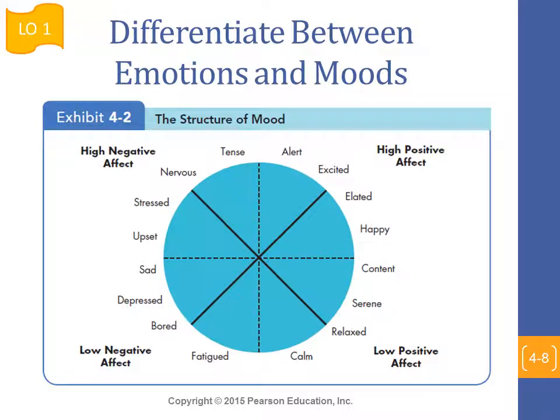When we talk about moods, different groups of emotions can be perceived together, defining different varieties of moods in human beings. These can be highly negative — where we see emotions of being upset, stressed, nervous, and tense — or they can have a highly positive effect, such as being alert, excited, elated, and happy.